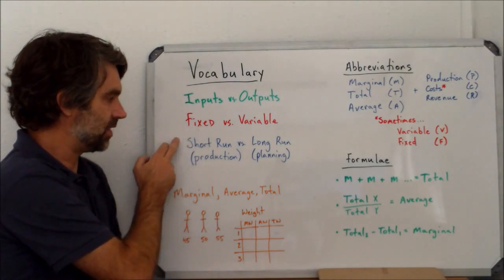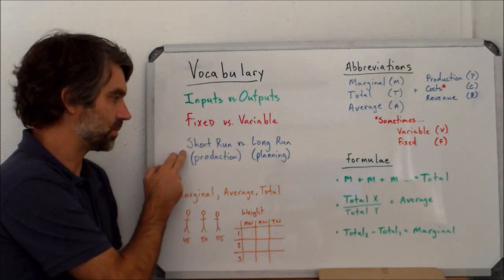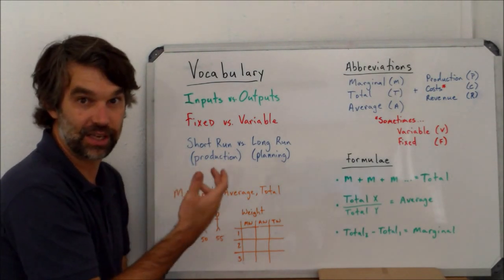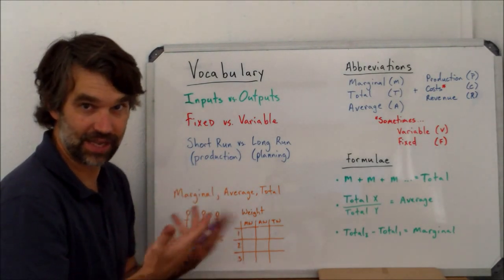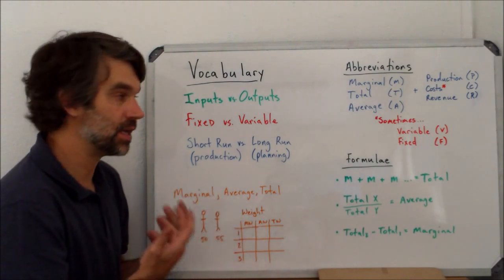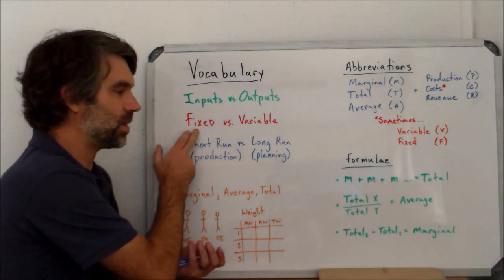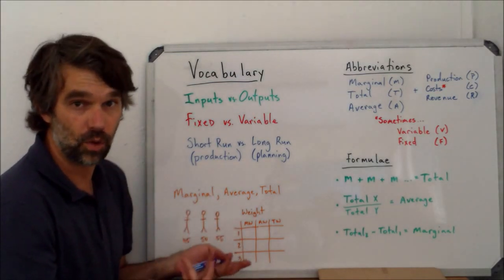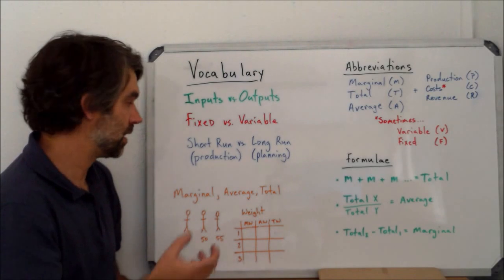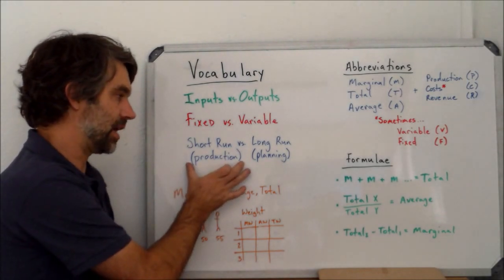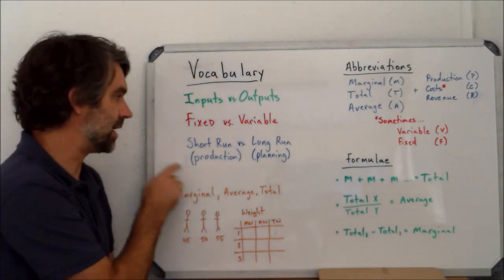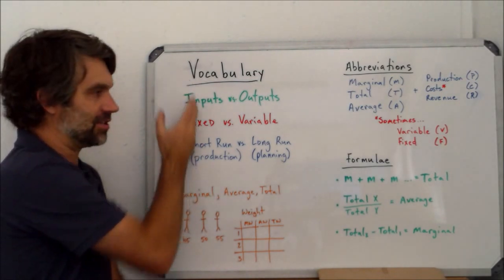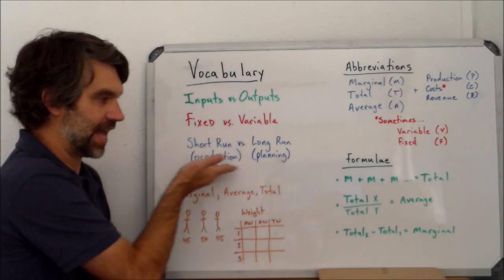So fixed relates to the next set of terms because the short run is when you are actually producing, when you're actually running the business and making something day in and day out. During that time, there's always going to be some amount of factors of production that are fixed. Maybe one or two, maybe more, but at least one. So this is the production phase, and the strict definition is that at least one of your inputs is fixed.